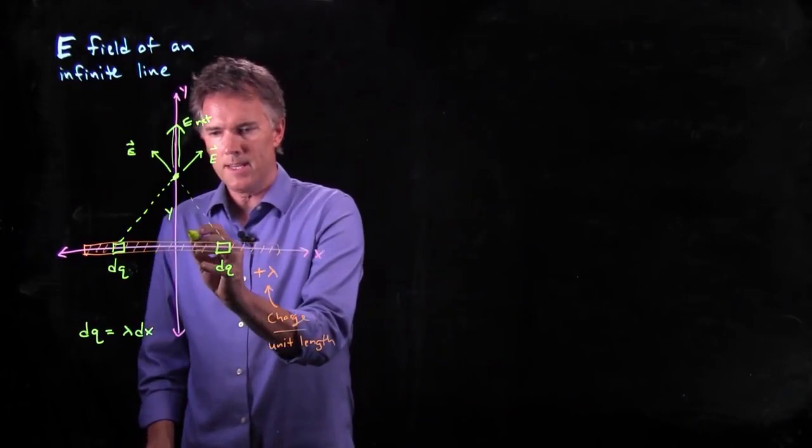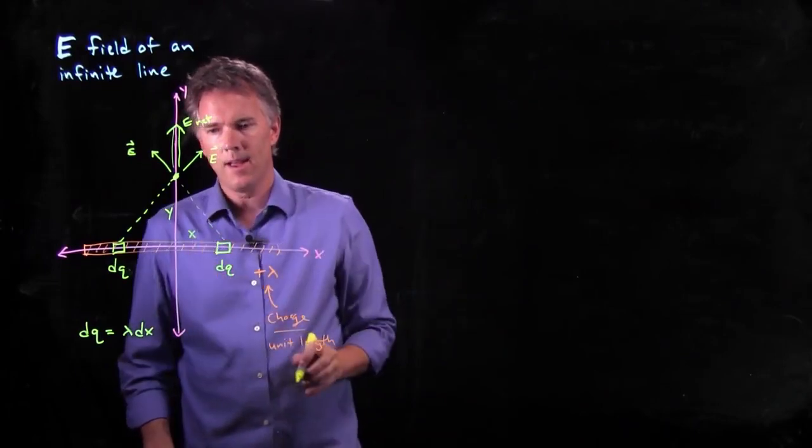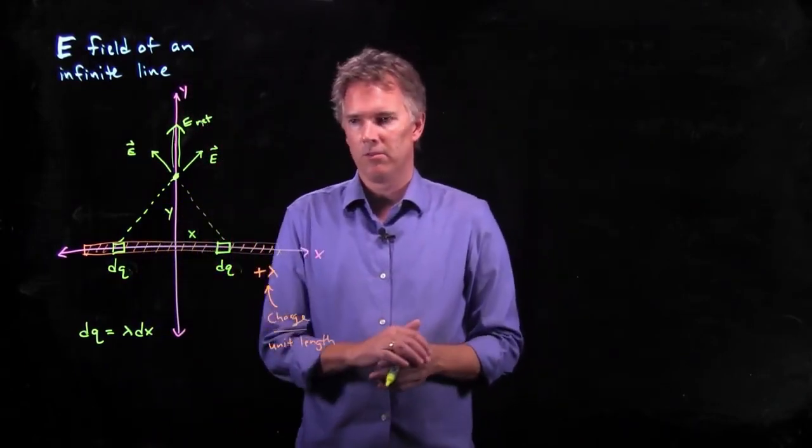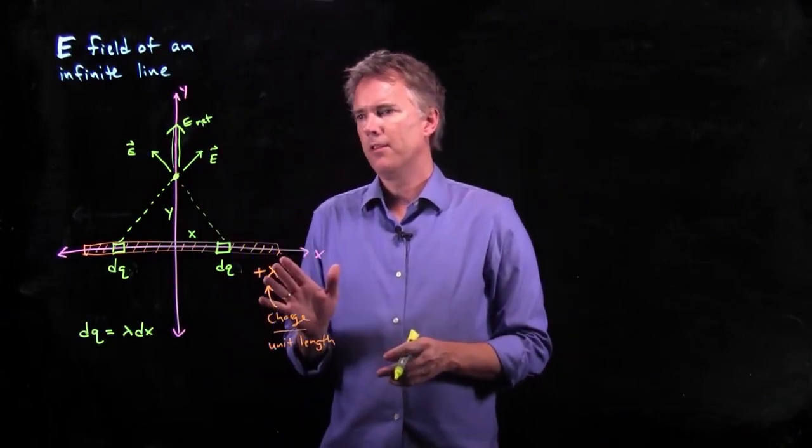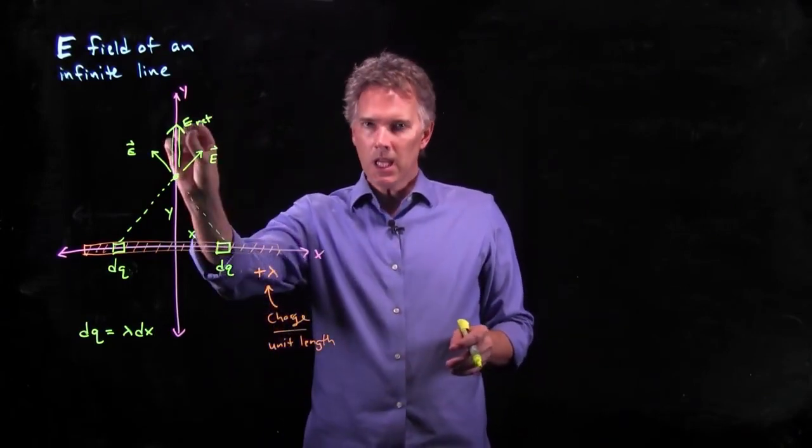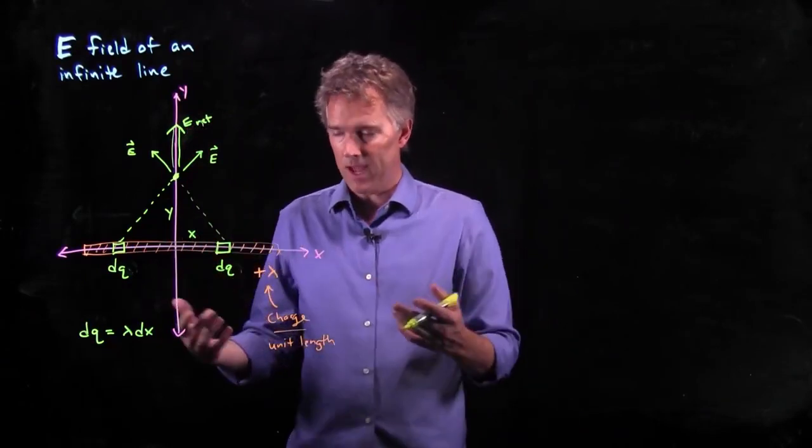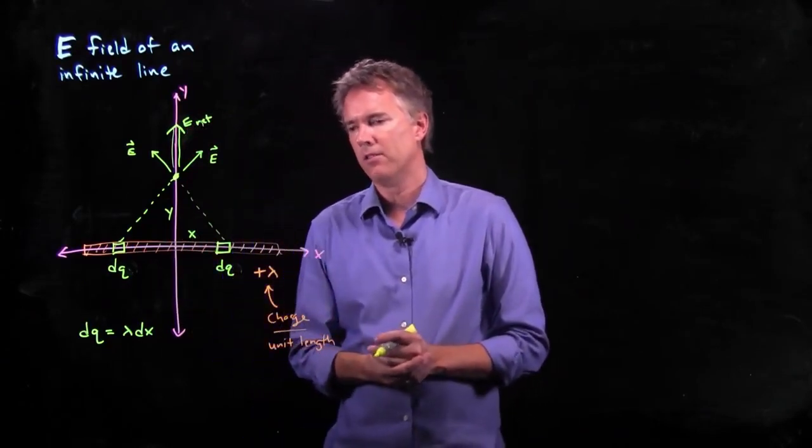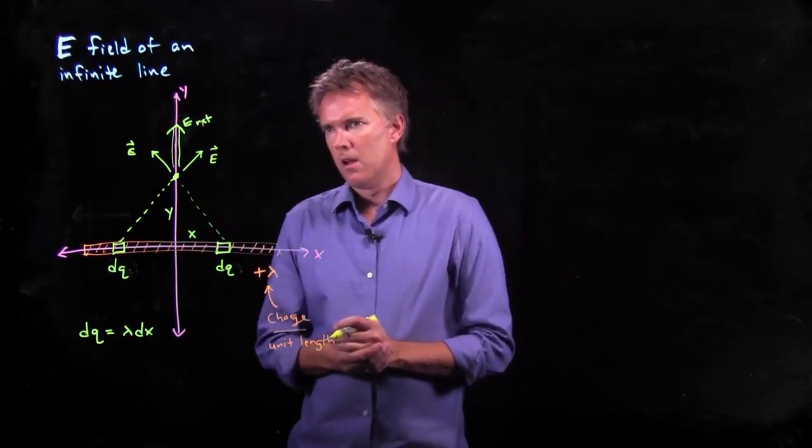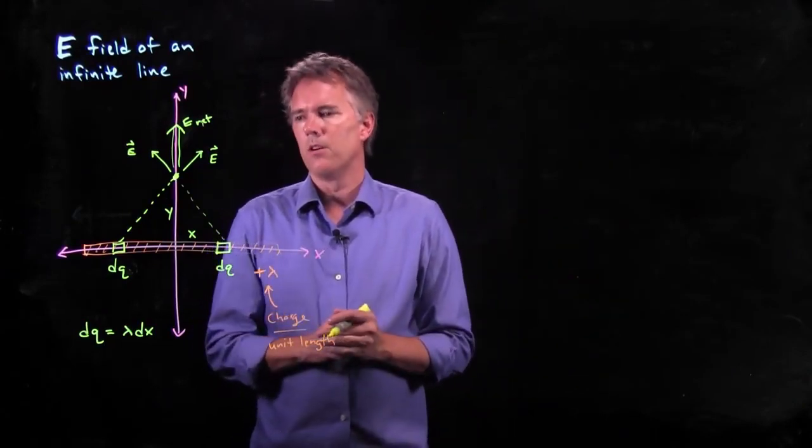We're out here a distance x away. We're up at a distance y. So let's see if we can calculate what the e net is for this configuration, and then we'll see how we can expand that to plus and minus infinity. This gets a little tricky, so hang in there.